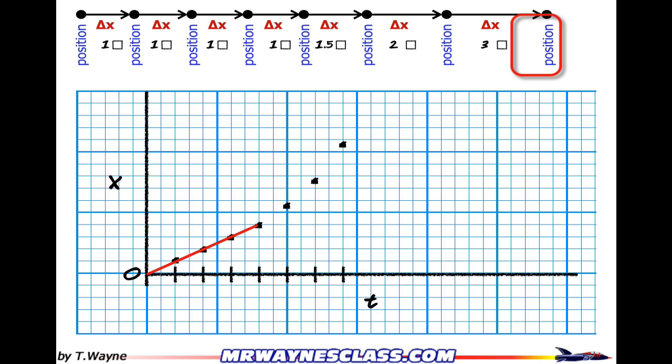For the next section, the delta x's change for each mark in time. So that's going to give me a slope that's going to change. So in this case, the slope, because the delta x's are getting bigger and bigger and bigger, the slope is getting steeper and steeper and steeper.